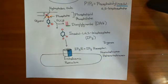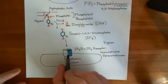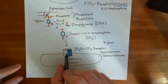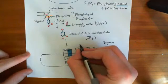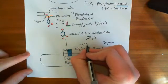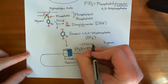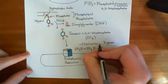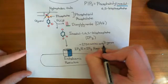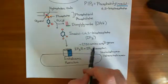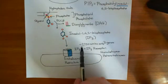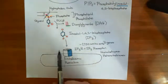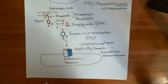One more interesting fact about the structure of the IP3 receptor: each one of the polypeptides making up a quarter of the IP3 receptor is absolutely massive — around 2,750 amino acids in length. So you are making this IP3 receptor out of four of those, giving you over 10,000 amino acids making up this receptor. It truly is a giant of a receptor.